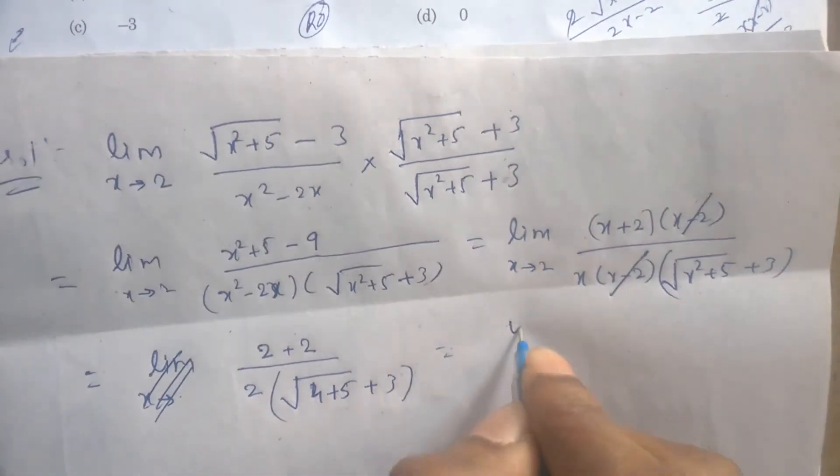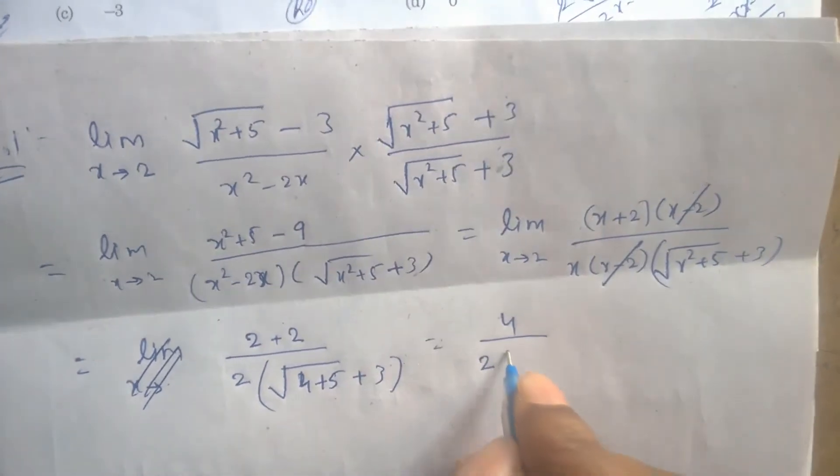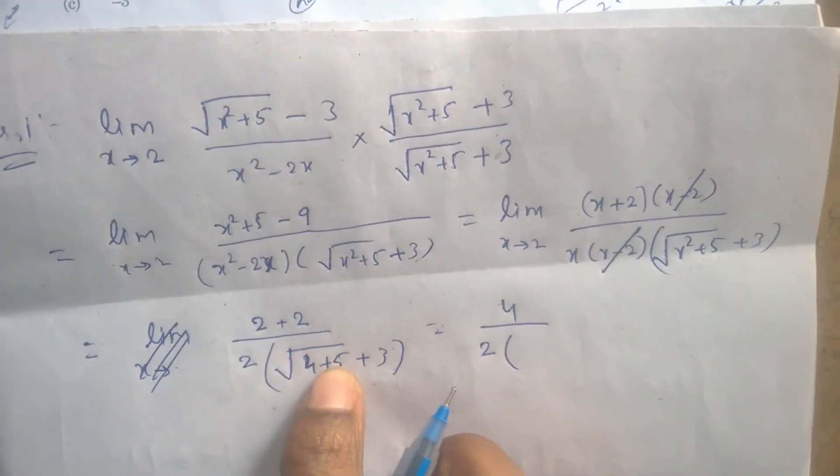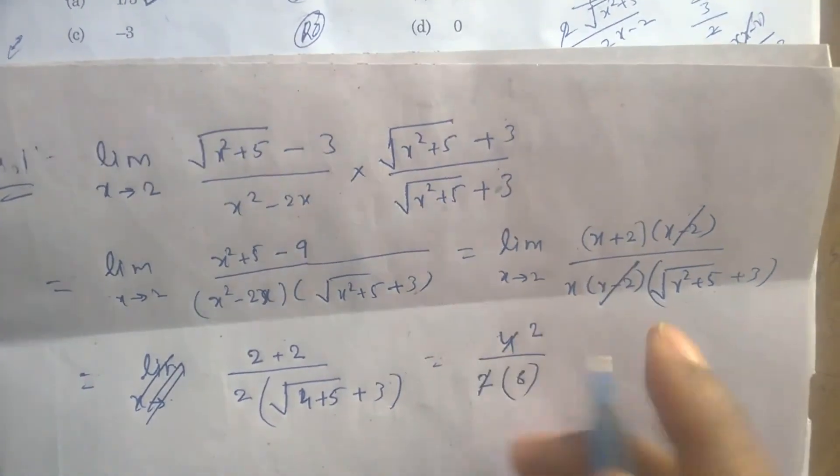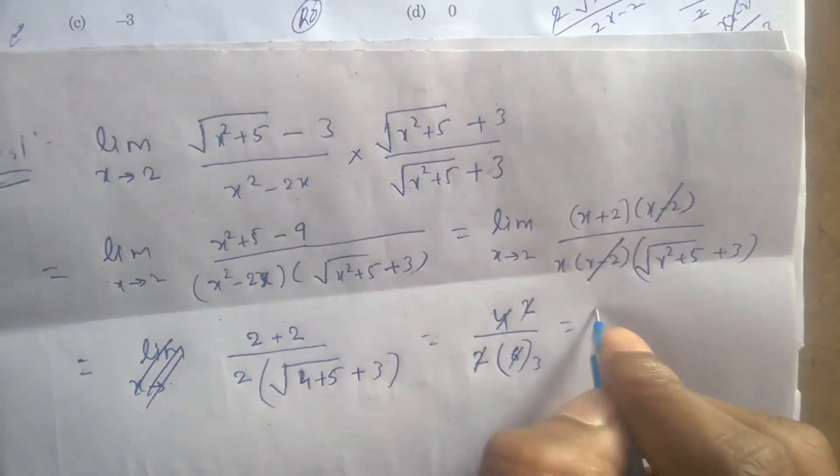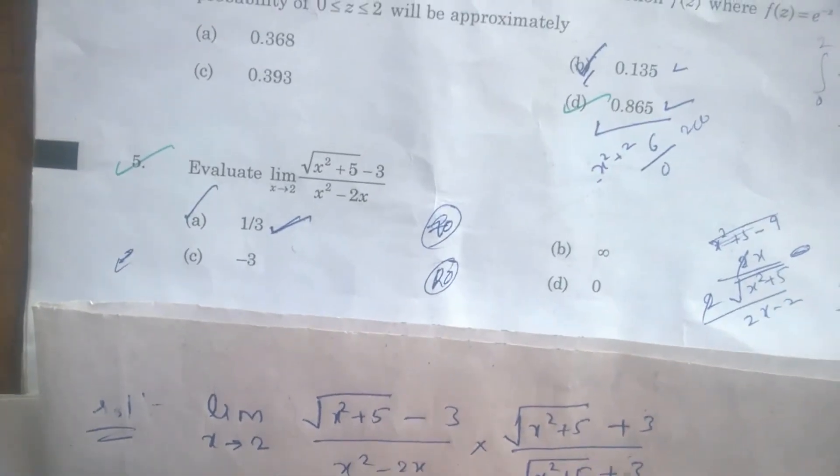Now 4 by 2 into, √9 means 3, 3+3 means 6. This equals 1/3, which is nothing but option A.